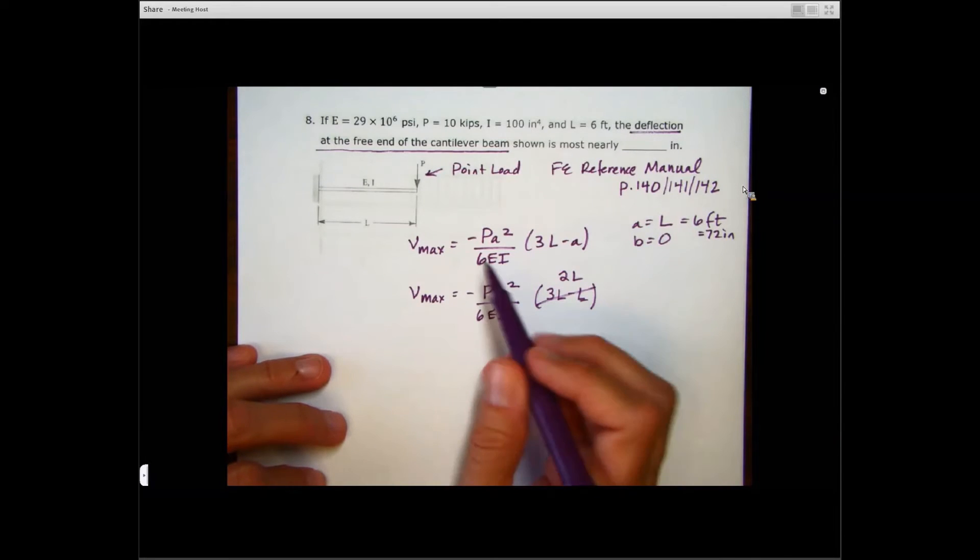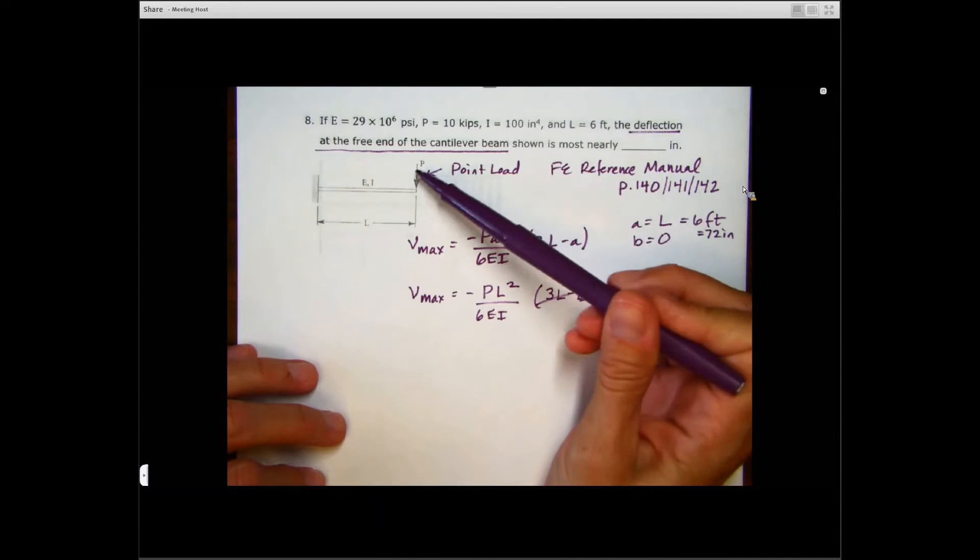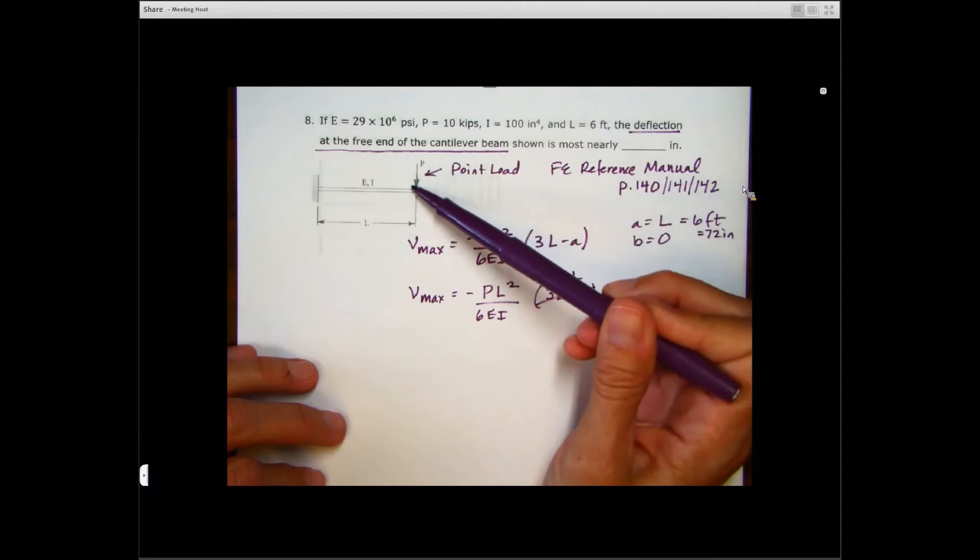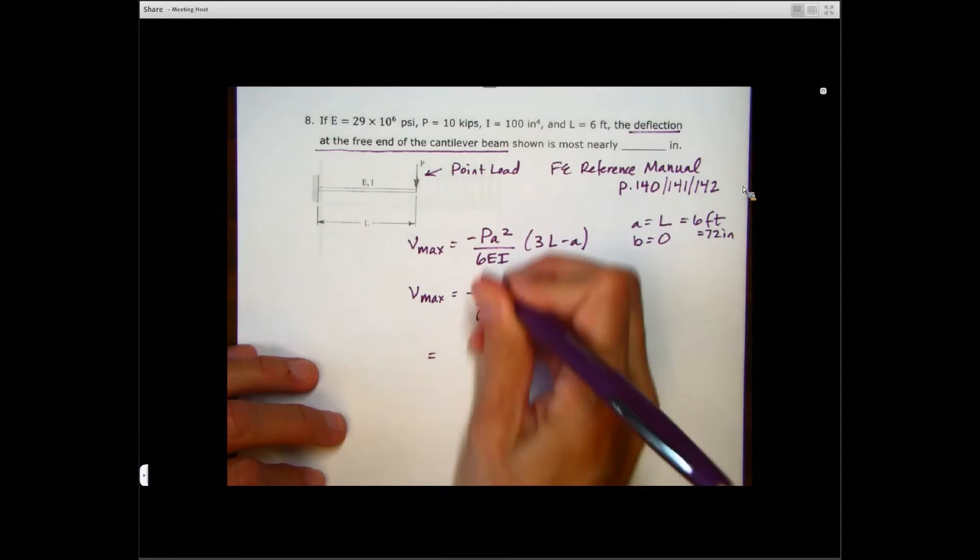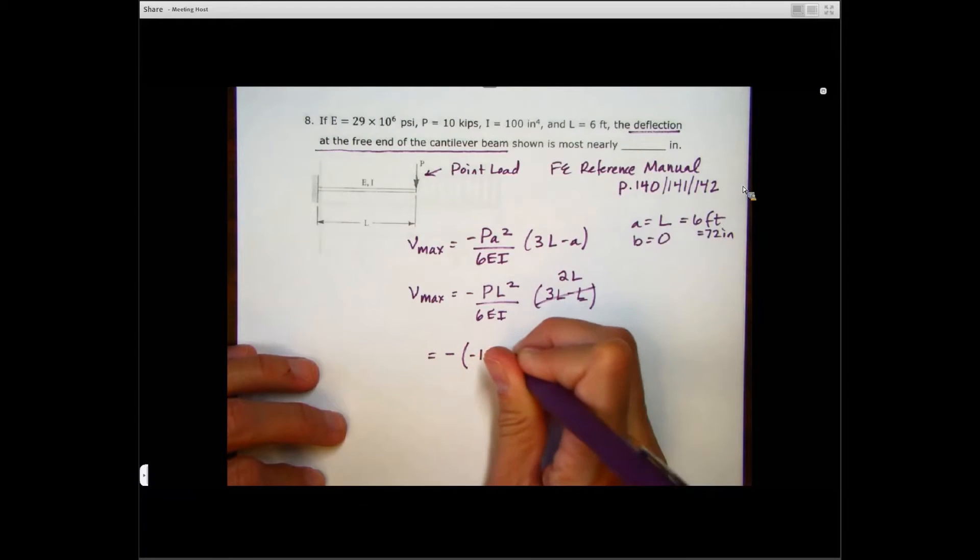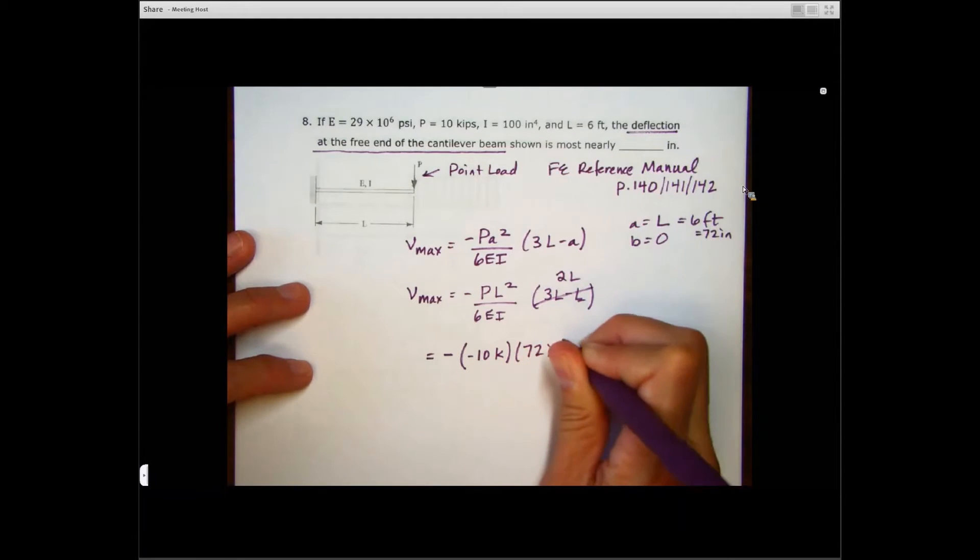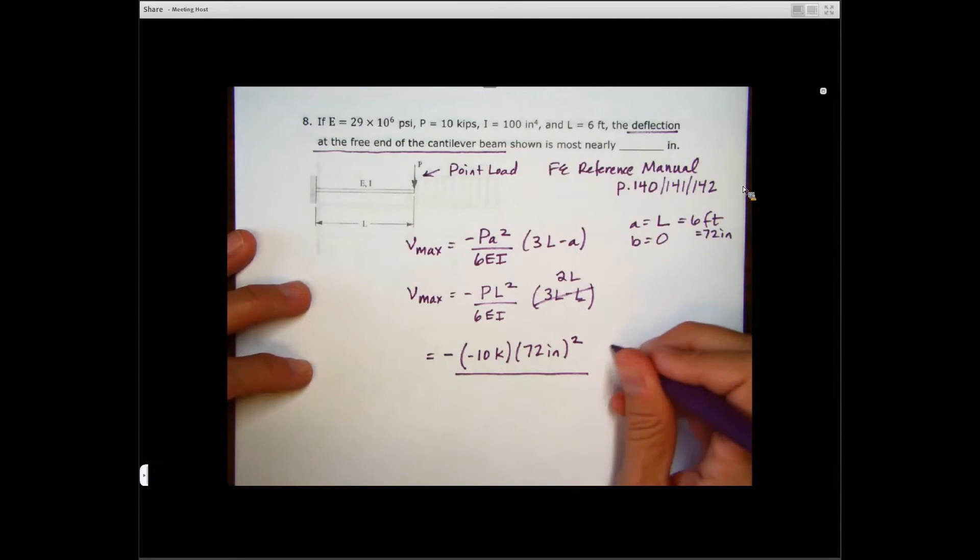So for our P here, we've got 10 kips. But remember that even though we're told P equals 10 kips, we have to look at our point load here. It is in this downward direction. So when we put this into our equation, we have a minus sign as part of our equation, but our P is a minus 10 kips. So important thing to remember.